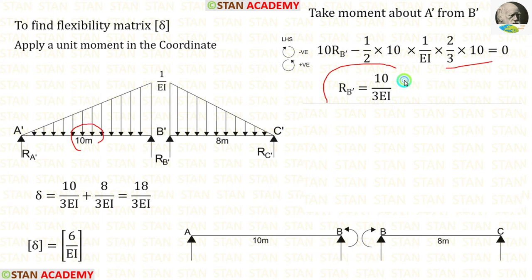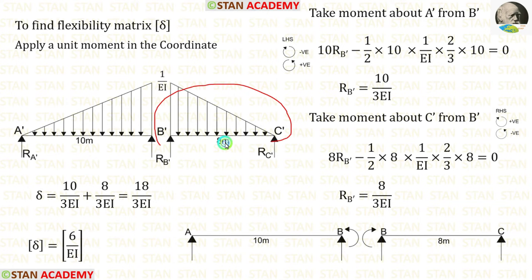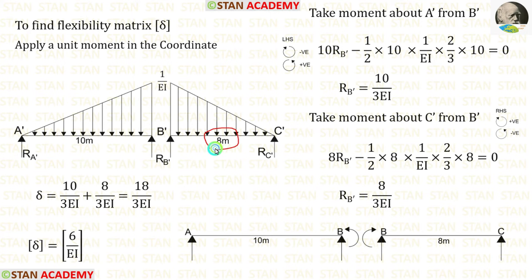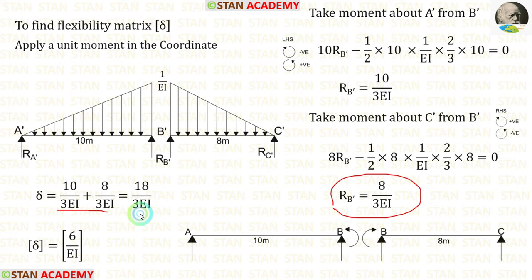Now let us take B'C' and find RB'. To calculate RB', I take moments about C'. Clockwise is positive and anticlockwise is negative. RB' acts toward C' in the clockwise direction, so it is positive with distance 8 m: 8RB'. For the UVL, area = (1/2) × 8 × (1/EI), centroid = (2/3) × 8. Finally we get RB'. Let us add both values — after adding, we are getting 18/3EI. Finally, we have calculated the flexibility matrix, which is equal to 6/EI.